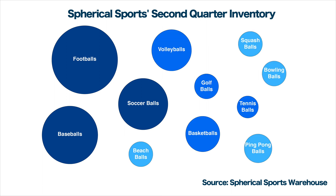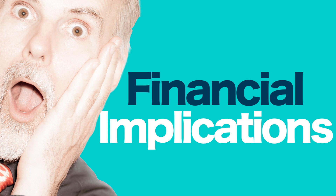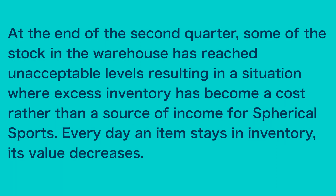Now you're ready to write a three-part description and analysis of the current state of Spherical Sports inventory. In the beginning of your executive summary, you should explain the recent build-up of stock and the potential financial ramifications of this situation. For example, at the end of the second quarter, some of the stock in the warehouse has reached unacceptable levels, resulting in a situation where excess inventory has become a cost rather than a source of income for Spherical Sports. Every day an item stays in inventory, its value decreases.